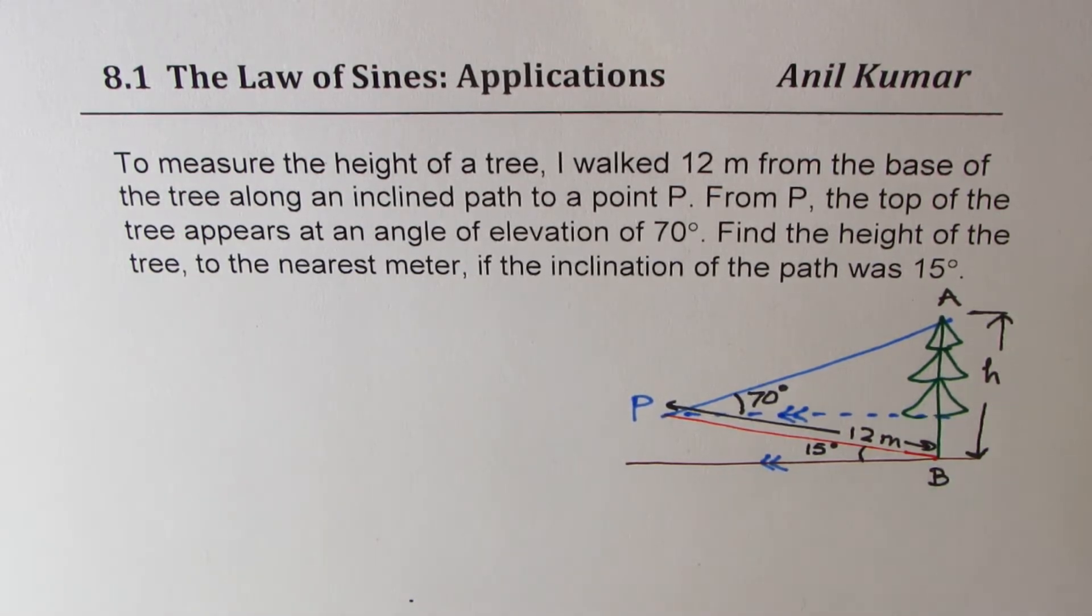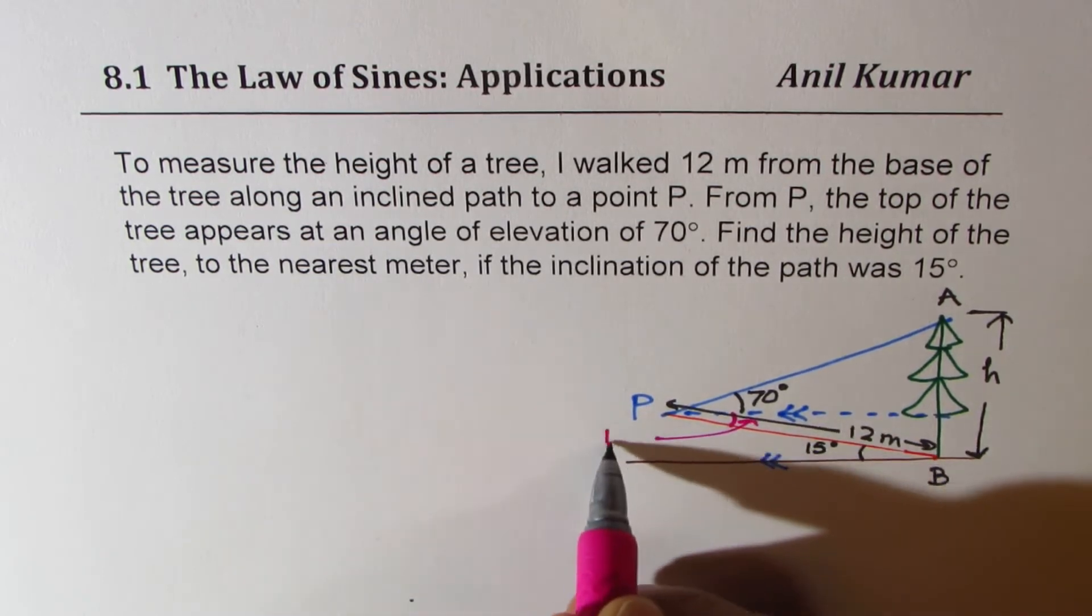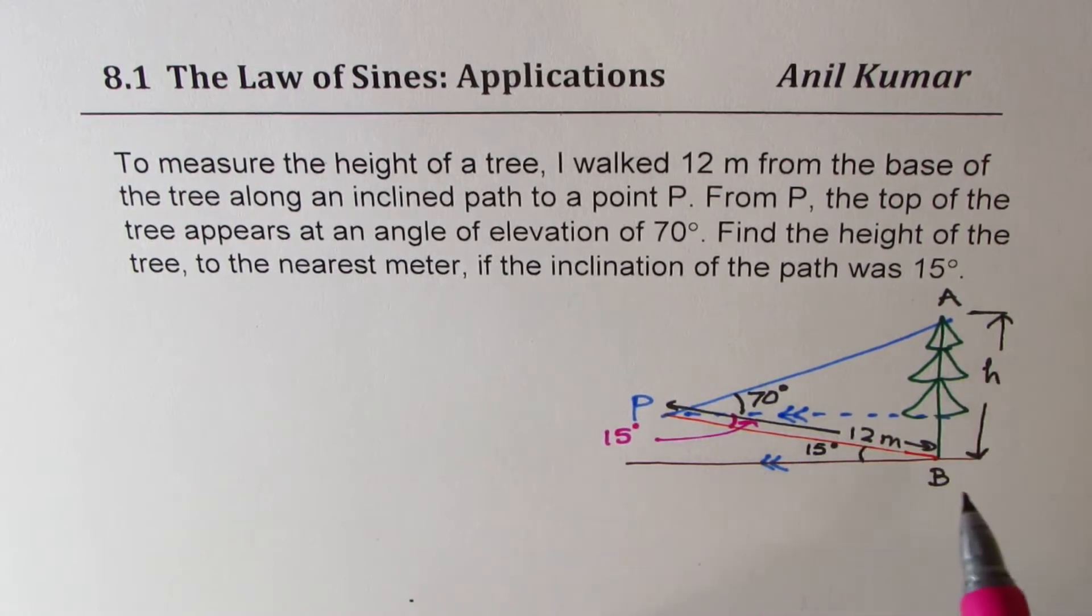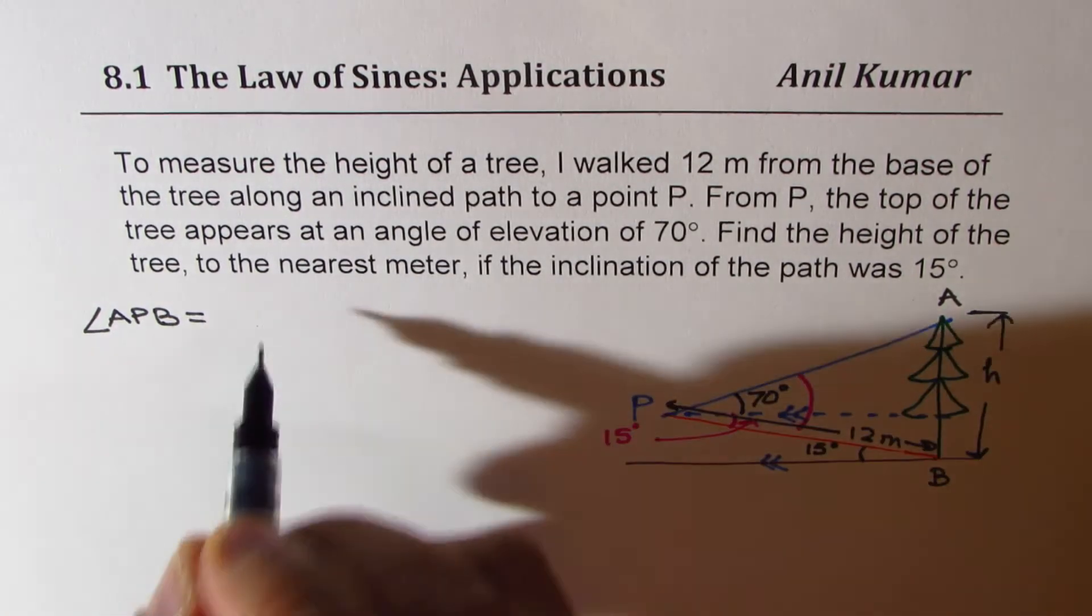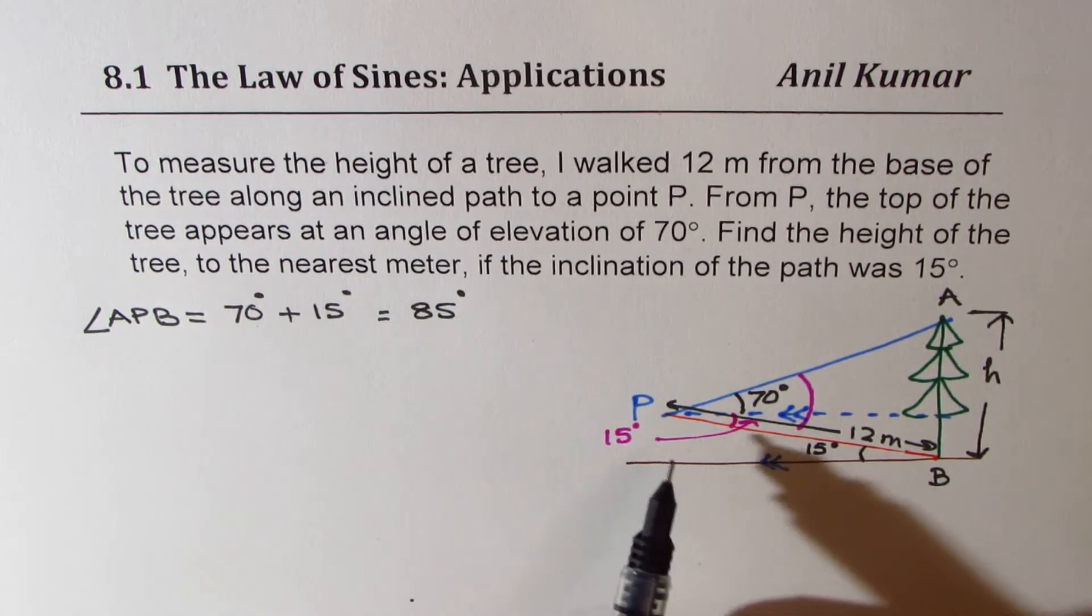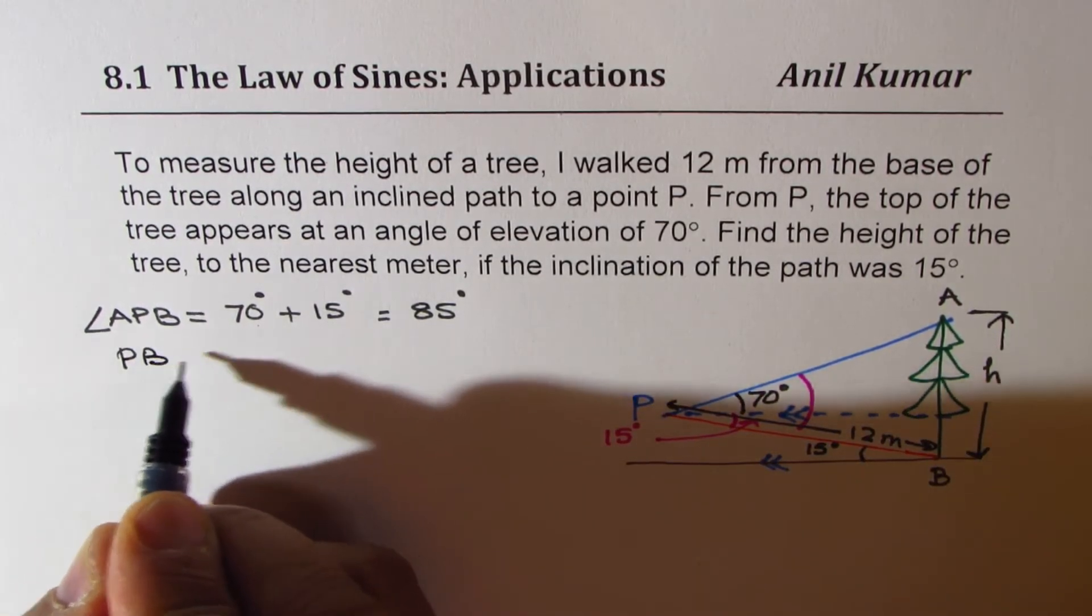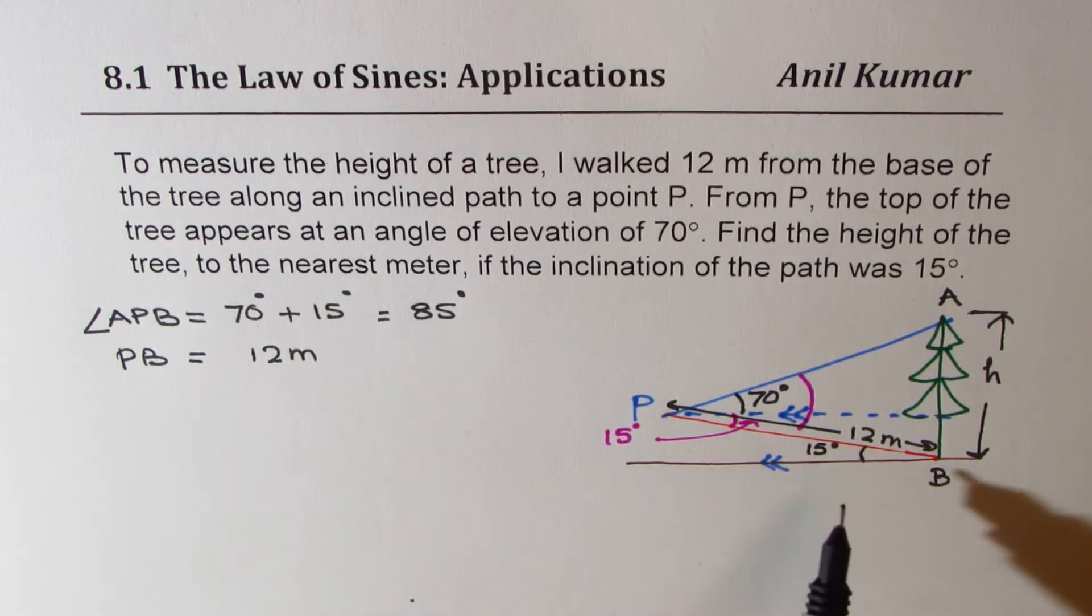Now, let's see how to solve and get the height of this particular tree. From the given scenario, we know that Z pattern is being formed. So these are alternate angles. This angle should also be 15 degrees. That makes the bigger angle as 70 plus 15. So we can say that angle APB is equal to 70 degrees plus 15 degrees, which is 85 degrees. We are given that P to B is 12 meters. Now we need to find the height, but we need one more angle.